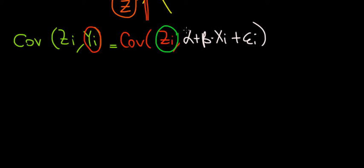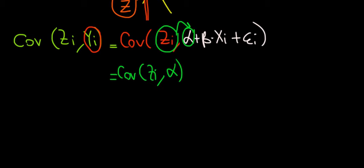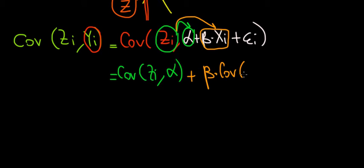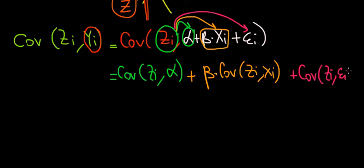We have the covariance between the instrumental variable and the constant of the regression line. Plus the covariance between the instrumental variable and the independent variable, which is beta times x — written as beta times the covariance between z and x. And finally, we have the covariance between z and the error term.